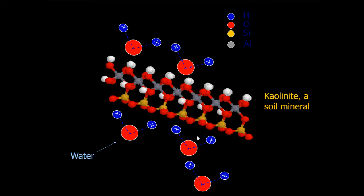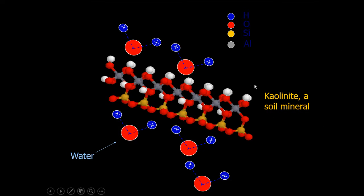If we look at water molecules and soil — taking kaolinite, one of the clay mineral types, as an example — clay has many negative charges. So water is attracted to the soil: the soil's negative side attracts the positive hydrogen side of water molecules. That is why water is actually very difficult to remove from the soil, because it is attracted so strongly to the soil surface.